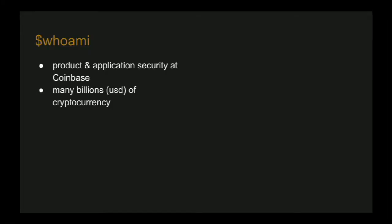So, a brief introduction about myself. I'm the head of product and application security at Coinbase. In terms of ownership, we've got everything from user security and user-facing products, to crypto nodes, hardware and up. For this talk, this is a brief case study in terms of how we built our hiring pipeline, why we hire as we hire, and who we look for.